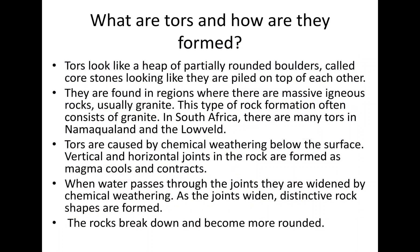Tors are caused by chemical weathering below the surface. When chemical weathering occurs below the surface, it results in the formation of tors. Vertically and horizontally, joints in the rocks are formed as magma cools and contracts. Before chemical weathering occurs, the tors require joints — vertical and horizontal joints in the rocks — which are formed when the magma cools and contracts.